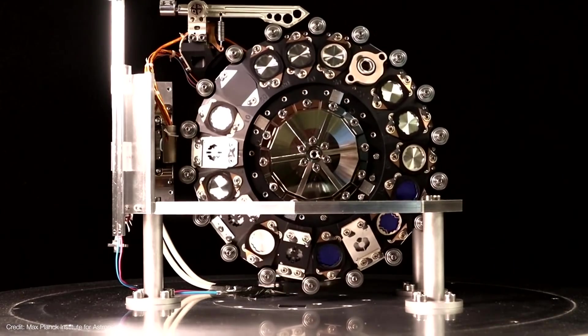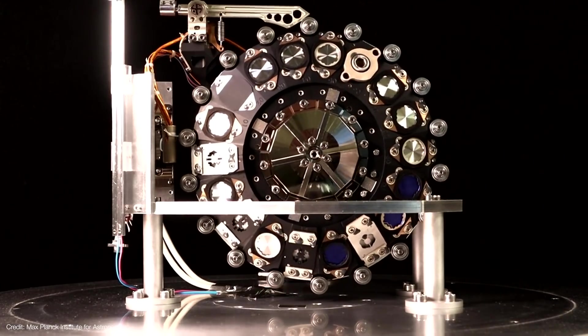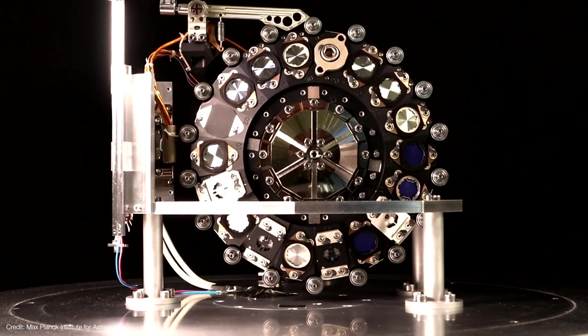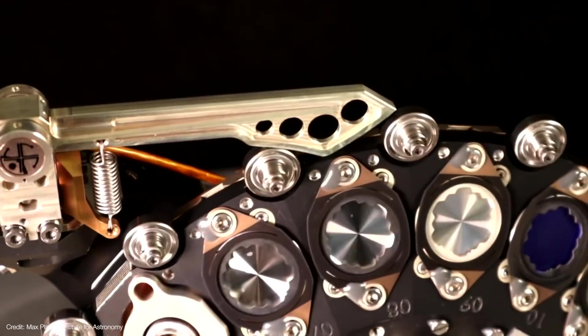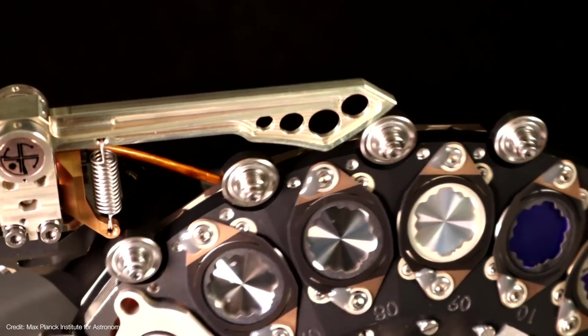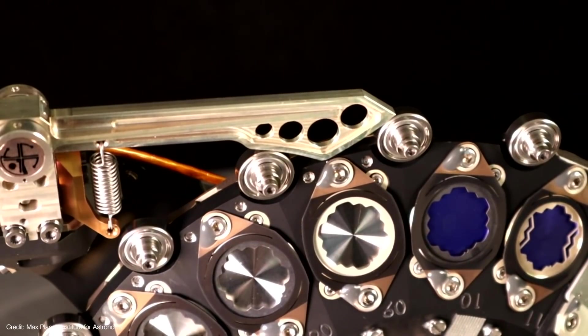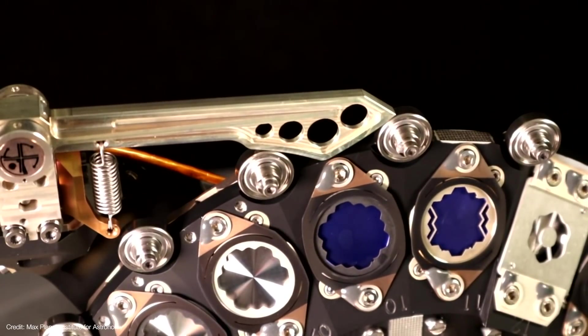This is a flight qualification model of a filter wheel used on the Mid-Infrared Instrument, or MIRI. It looks like a piece of modern techno art, but it's a critical component of what is literally the coolest instrument aboard the James Webb Space Telescope.